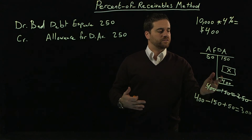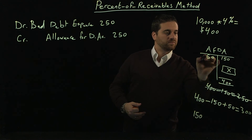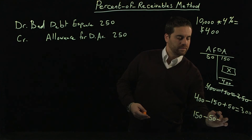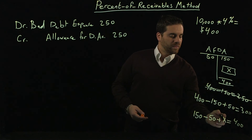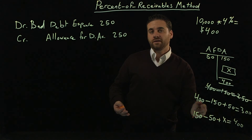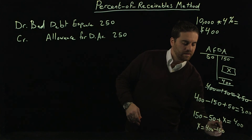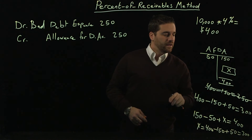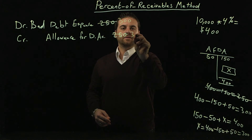We can calculate that in a different way — going in order instead of backwards. Start with $150, subtract the $50 write-off, then add X, and that equals $400. Solving for X: move the numbers to the other side and flip the signs, so X equals $400 minus $150 plus $50, which is $300. So the amount that has to be recorded in the journal entry, if there was a write-off, would be $300 instead of $250.